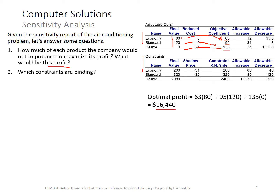Second question: what constraints are binding? We look at whenever the left-hand side equals the right-hand side. The fans constraint is binding and the cooling coils constraint is binding, because their left-hand sides equal their right-hand sides. The man hours constraint is not binding. As for the quantity used from each resource, we look at the final value: 200 fans used, 320 cooling coils used, and 2,080 man hours used.